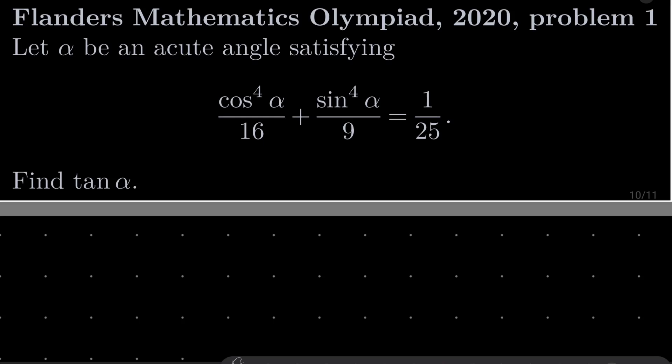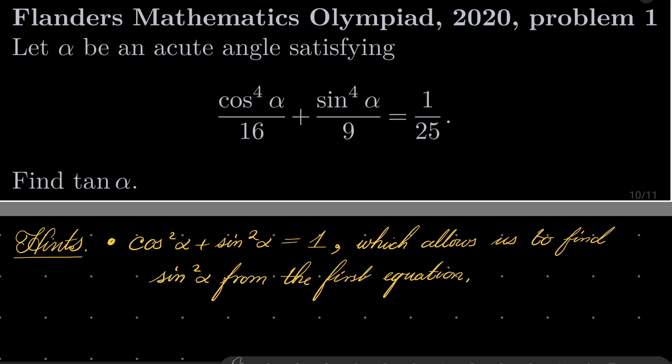So it's a rather simple and standard problem from trigonometry. Here are my hints. It's all about the well-known identity: cosine squared plus sine squared is always 1, which allows us to eliminate one variable and solve for the other variable using this equation. And once we have sine and cosine, we can safely find tangent. Give this problem a try.